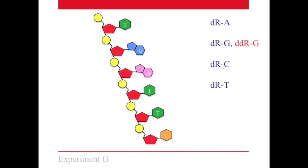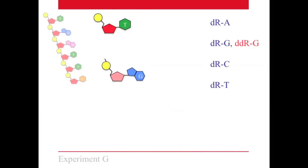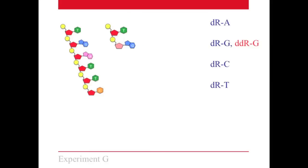Let's do the same experiment for G. In this case, again, it's possible that we get the full sequence, or it's possible that at our first instance of G we insert a dideoxy and the sequence stops. Therefore, there are two options for our G experiment.